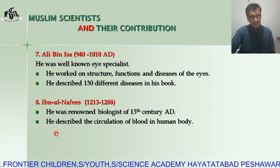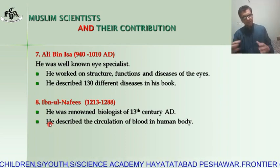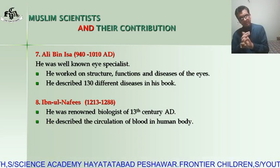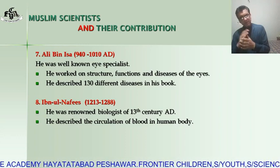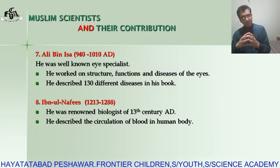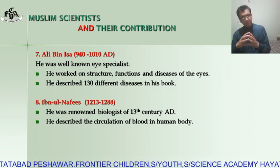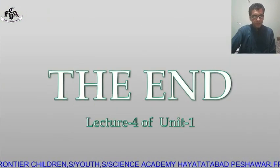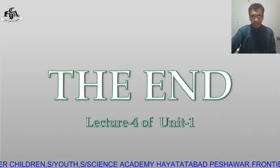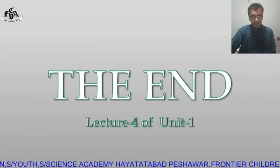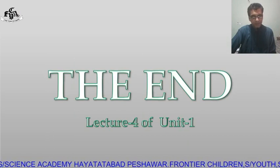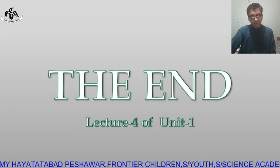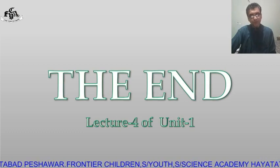The next scientist is Ibn al-Nafis, 1213 to 1288 AD. He was a very famous biologist of the 13th century. For the first time, he described the circulation of blood in the human body. These were a few Muslim scientists of the past, and this was the end of lecture number four of Unit One. Thank you.